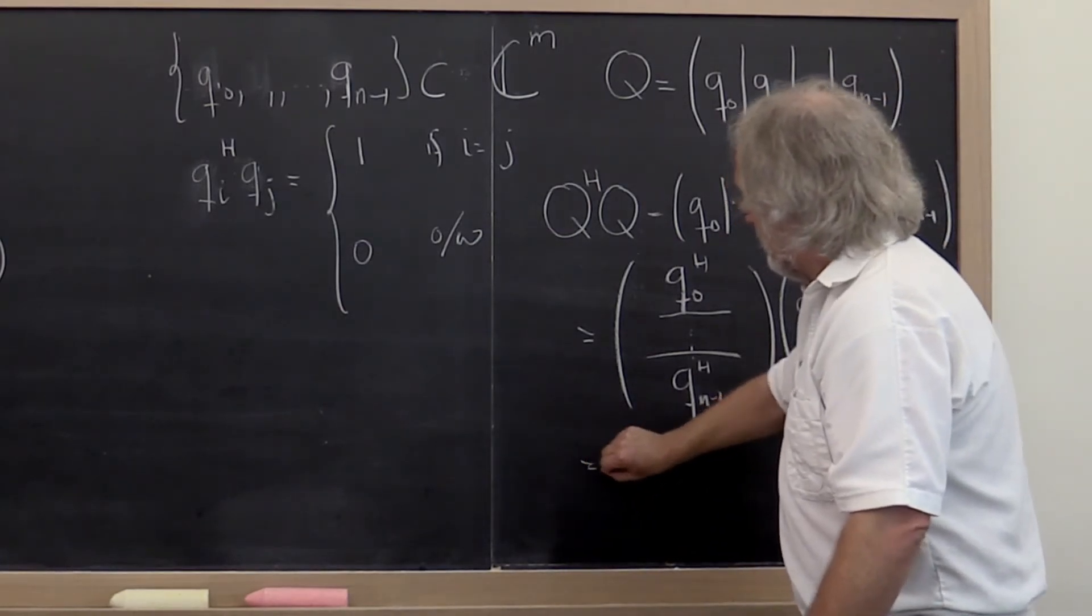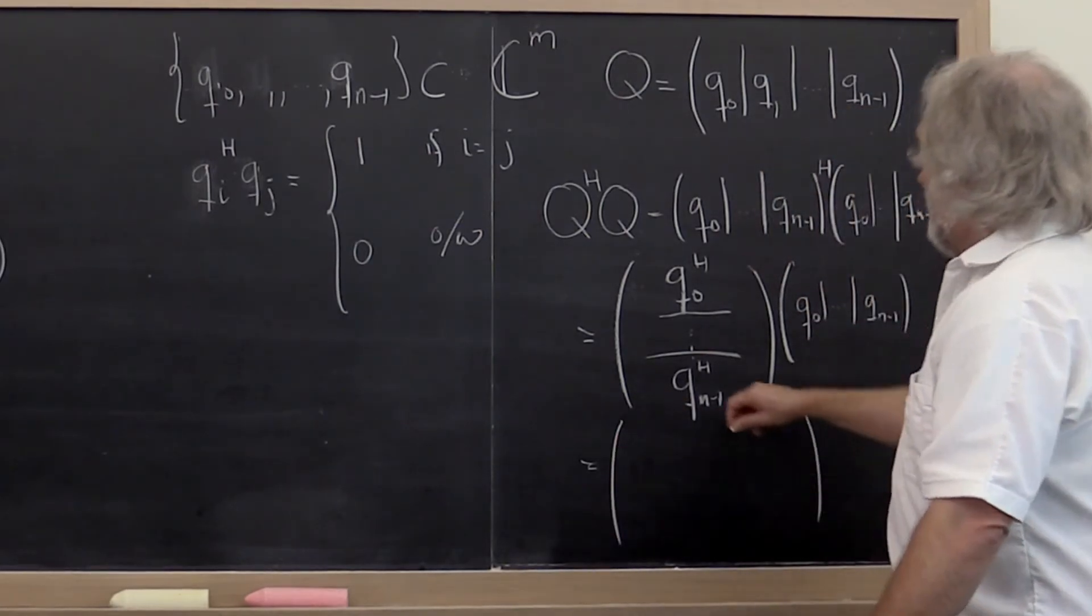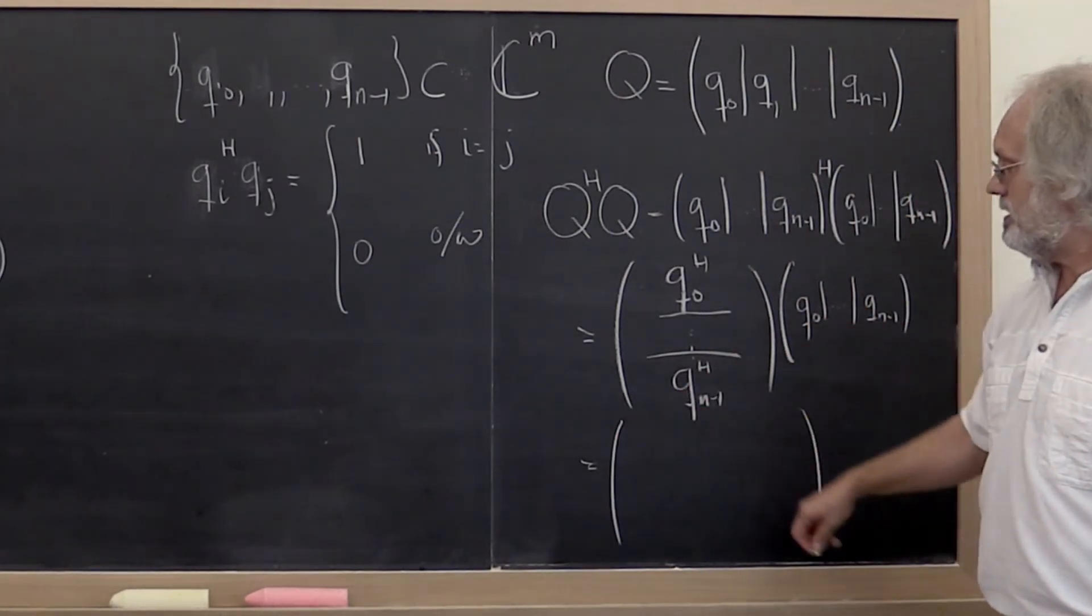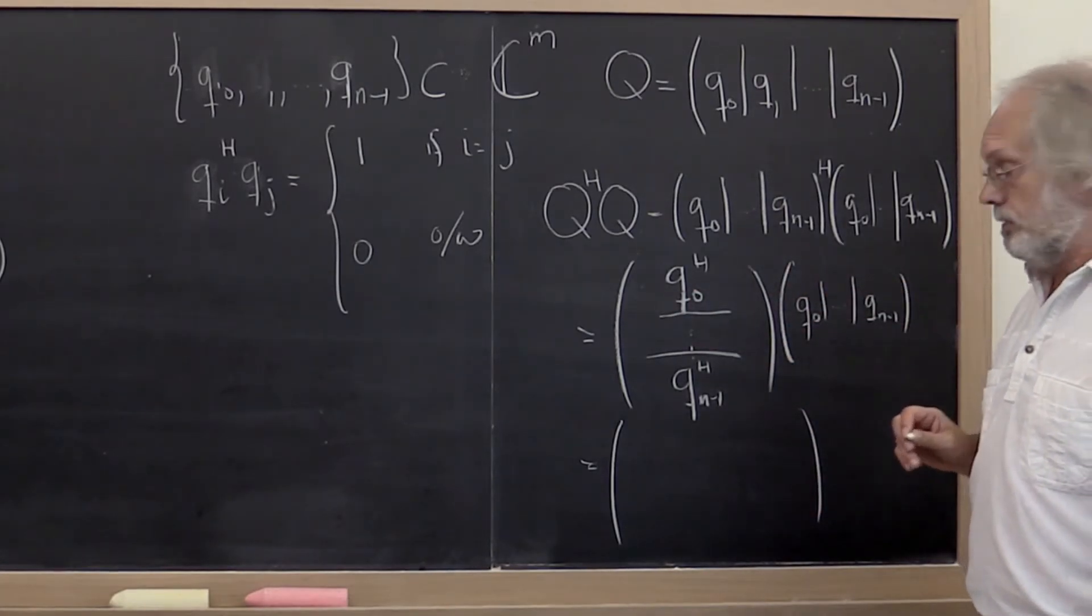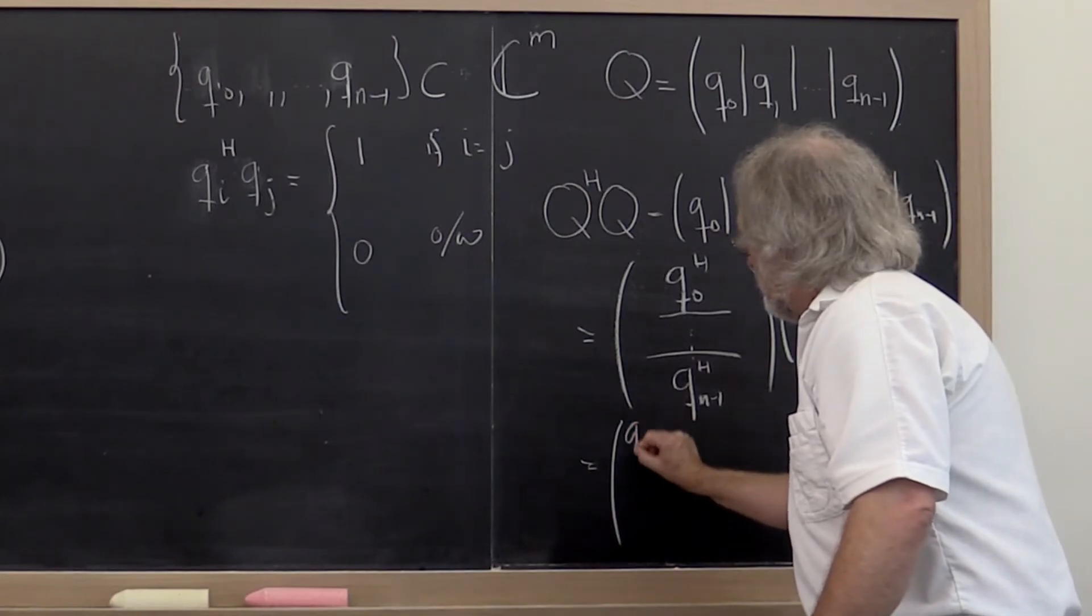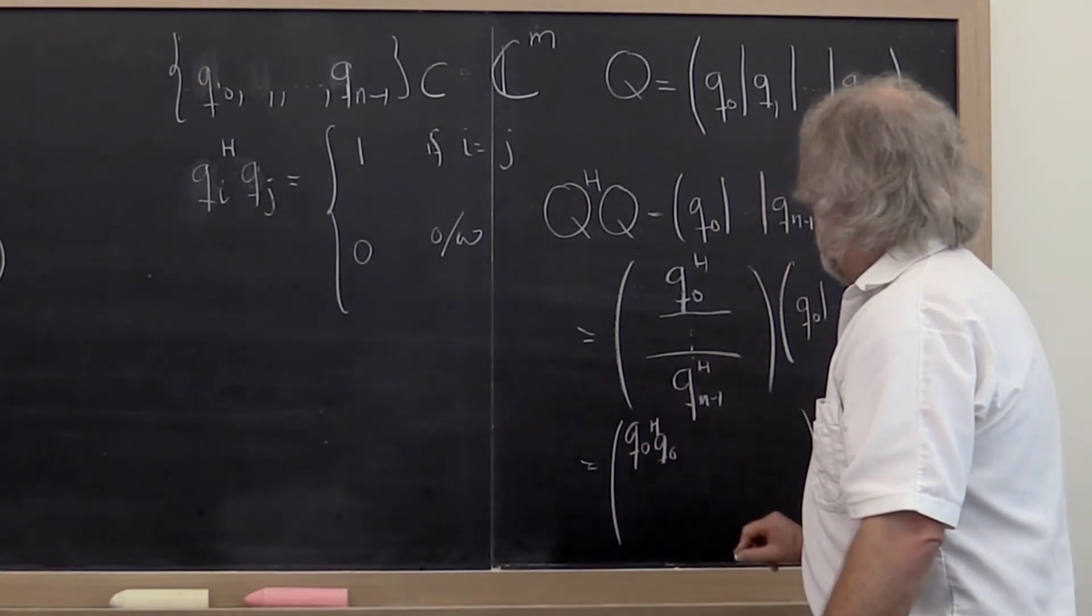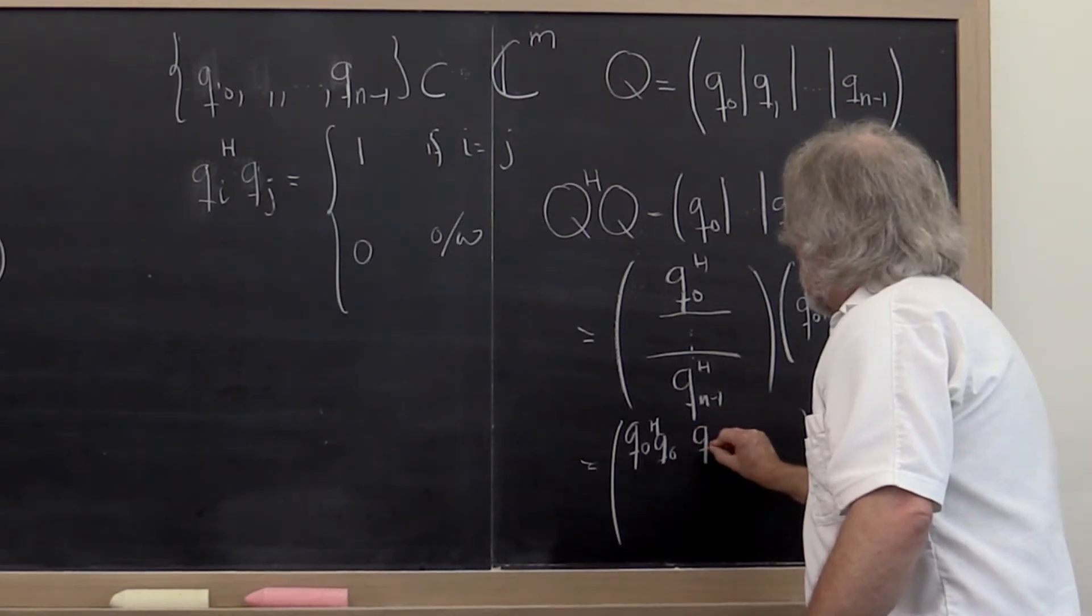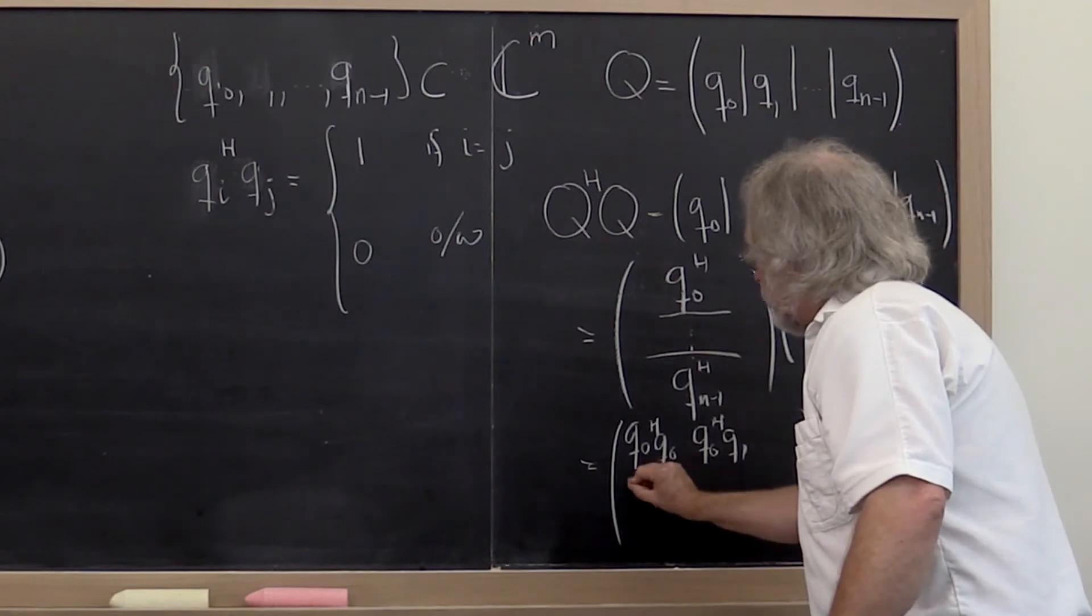And that then is, let's see, it's an n by n matrix where the entries in the matrix are the dot products of all of these columns. The first entry is Q0 Hermitian q0. The second entry is Q0 Hermitian q1, and so forth.